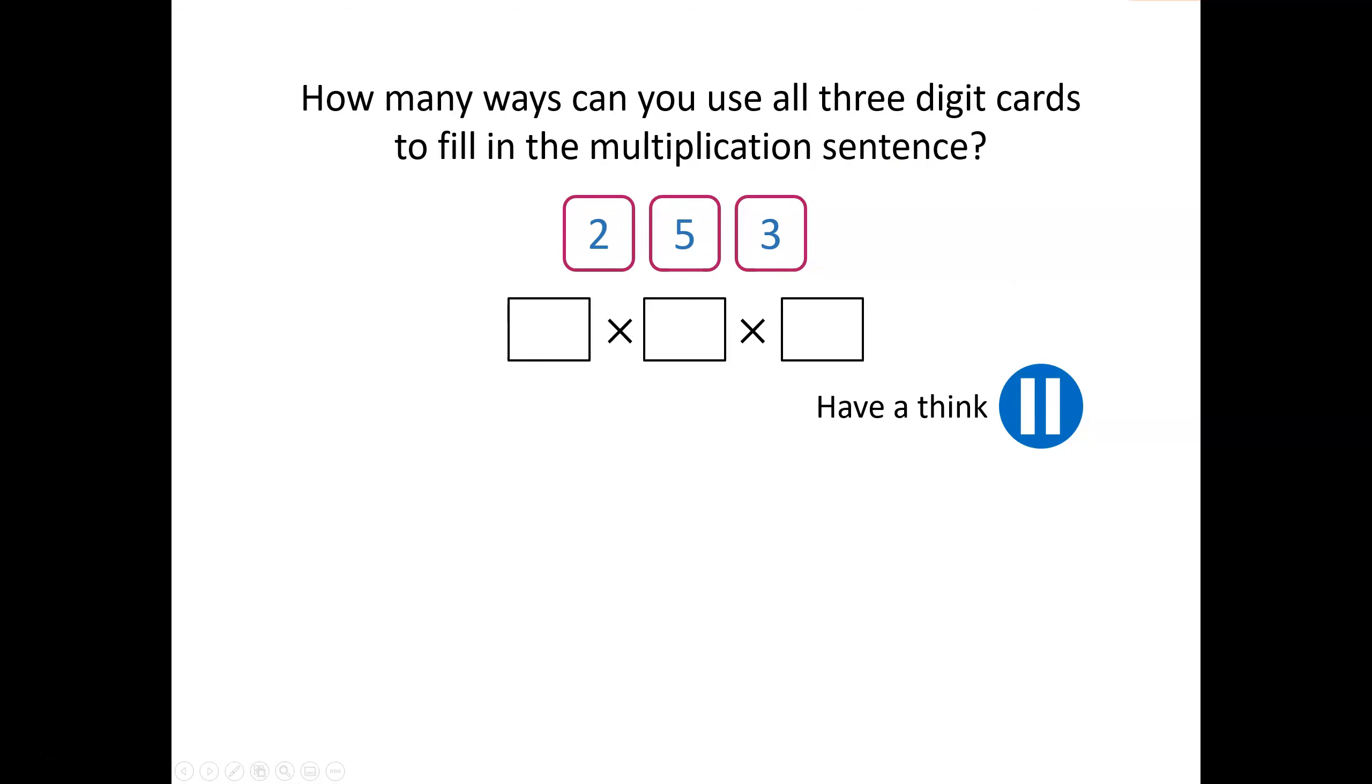How many ways can you use all three digit cards to fill in the multiplication sentence? Pause the video now and have a wee think. I'm going to start with the two in the starting place. So I can write 2 × 5 × 3, 2 × 3 × 5. If we use three in the starting place, I could write 3 × 2 × 5 or 3 × 5 × 2. And my last option will be placing five at the starting position. There are six ways of completing the multiplication sentence.